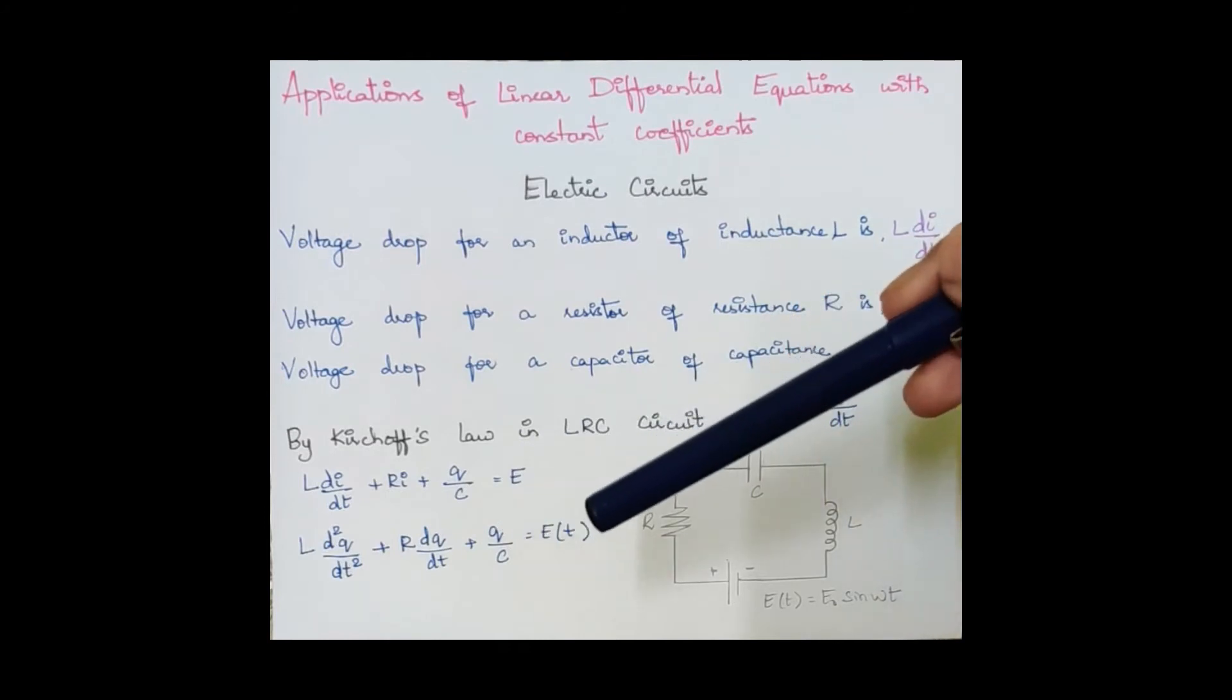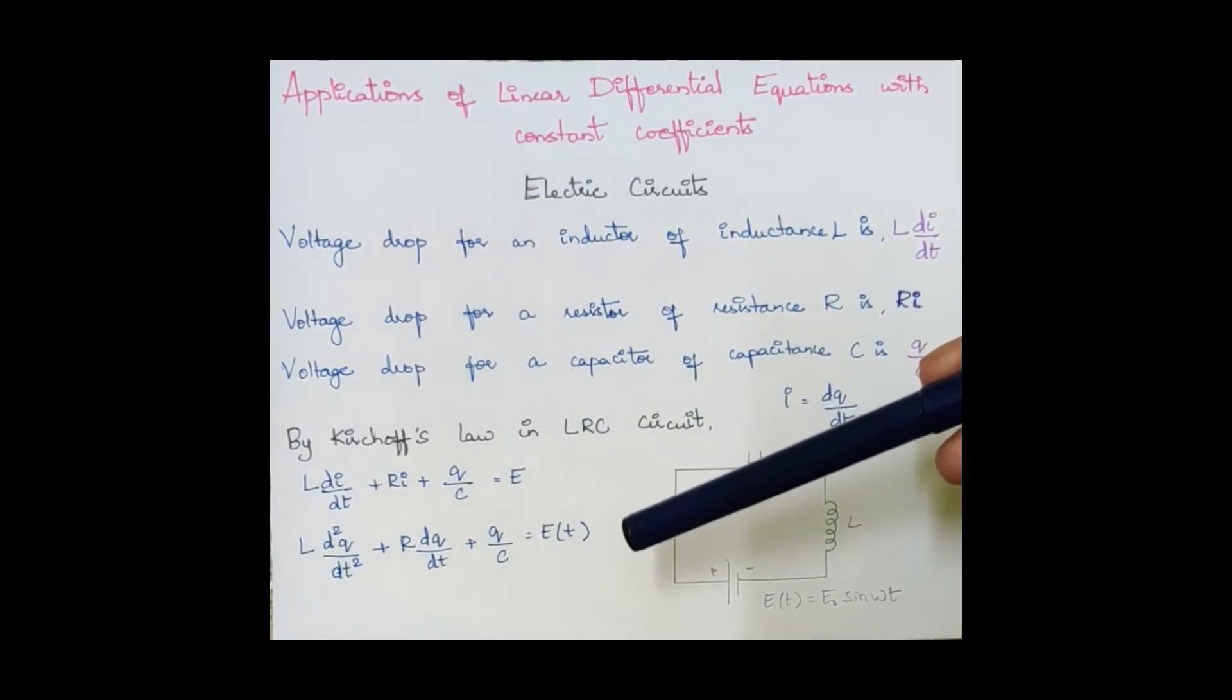Now on substituting i with dq/dt, the equation becomes L(d²q/dt²) + R(dq/dt) + q/C = E with respect to t.